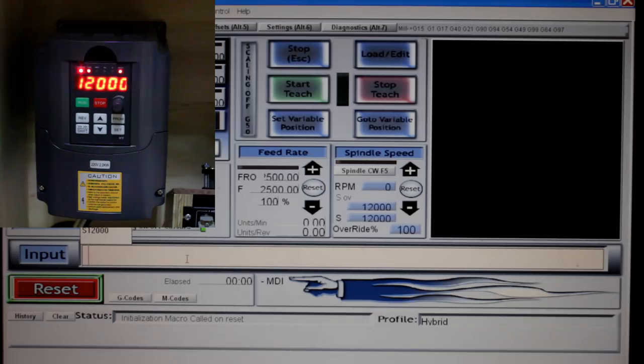I'm going to enter another command of S 6000. And the speed reduces down to 6300 rpm. If I go S 10000, which is the normal speed I do most of my machining at, or at least the starting speed. Again it ramps up to just a little bit over 10000 rpm.